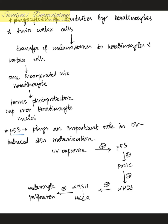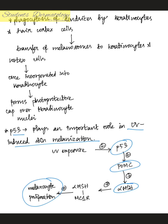P53 plays an important role in UV-induced skin melanization. On UV exposure, p53 is stimulated, which in turn stimulates pro-opiomelanocortin → alpha-melanocyte-stimulating hormone, which combines with the melanocortin-1 receptor gene and causes melanocyte proliferation.